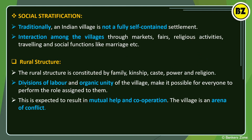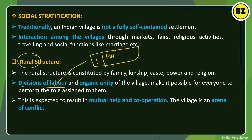In the context of rural structure, division of labor means different work done by different people. For example, there are agricultural workers, goldsmiths who make gold ornaments, and laborers working in industries. Every worker does their own work — this is the division of labor.